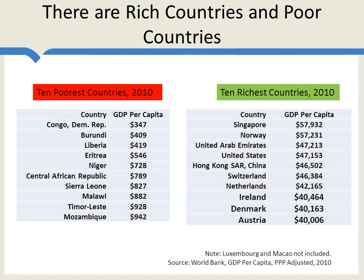The United States is not the world's richest economy in terms of GDP per capita, but it's the world's richest large economy, with GDP per capita of about $47,000 per year. The poorest 10 countries in the world—Congo and Burundi competing for the bottom spot—have GDP per capita that is more than 100 times lower than the United States, and about 100 times lower than some European economies.